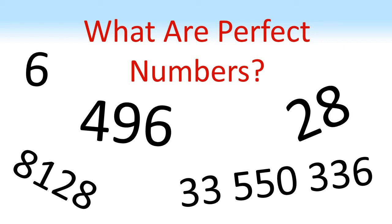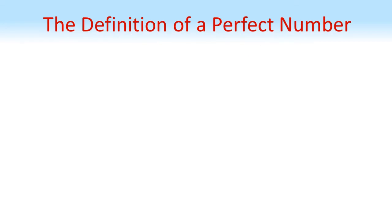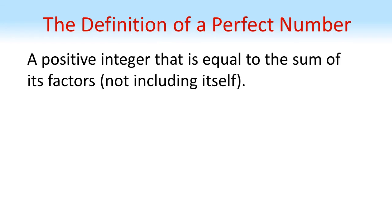What are perfect numbers? A perfect number is a positive integer, a whole number, that is equal to the sum of its factors, not including itself.